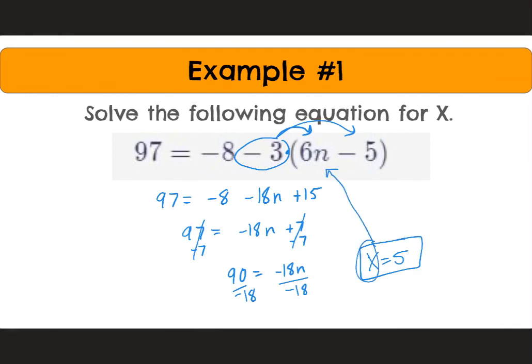Oops. This isn't x. This is actually n. This happens a lot. n equals 5. I apologize for that typo. There's a couple more examples for you to try in the Pear Deck.